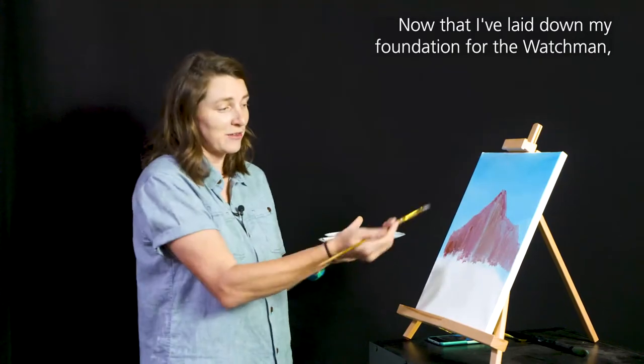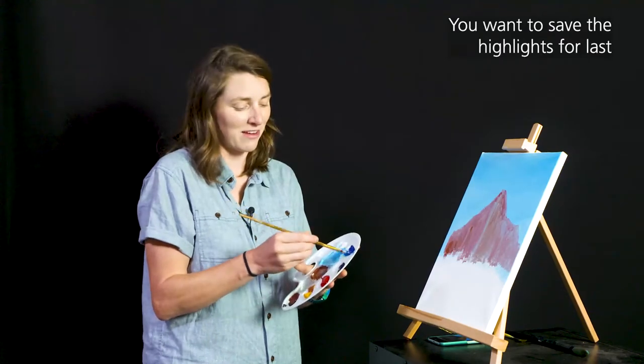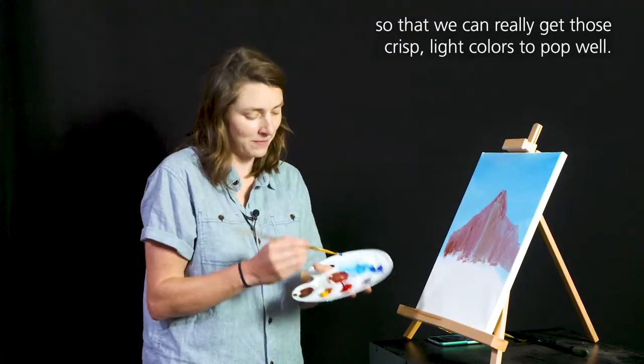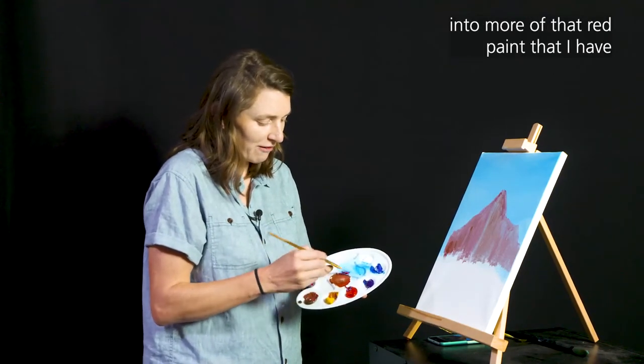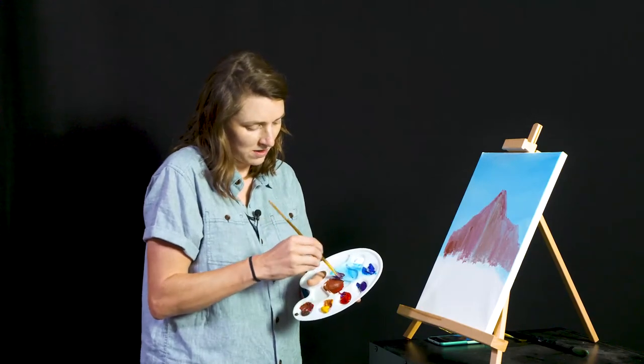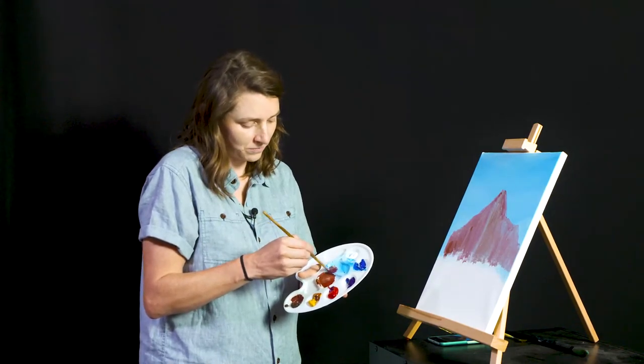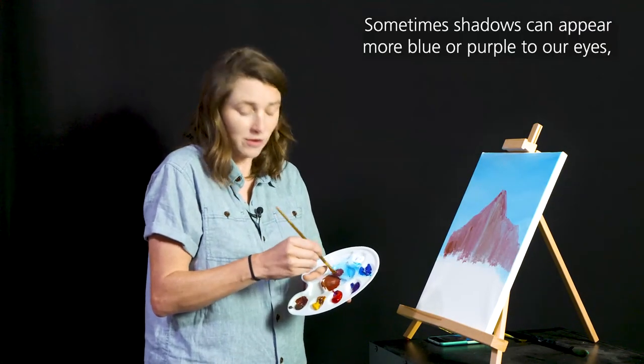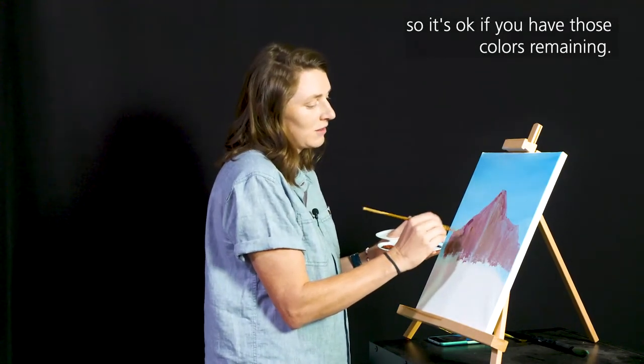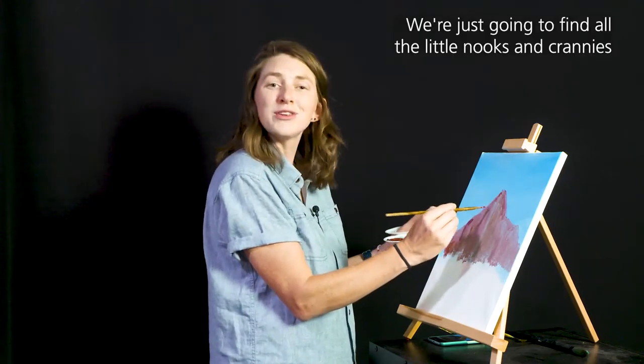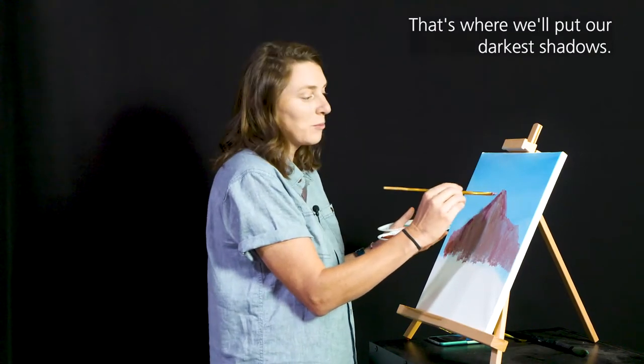Now that I've laid down my foundation for the Watchman I'm going to add in some shadows. We want to save the highlights for last so that we can really get those crisp light colors to pop. I'll mix some blue and maybe even some purple into more of that red paint that I have. I'll add in a little bit of gold as well. That'll help it become a little bit more brown for us. Sometimes shadows can appear more blue or purple to our eyes, so it's okay if you have those colors remaining. We're just going to find all the little nooks and crannies in the rock face and see where they're deepest, and that's where we'll put our darkest shadows.